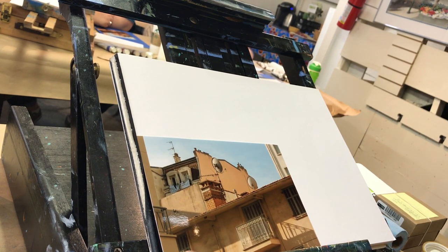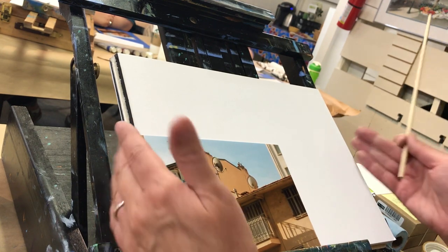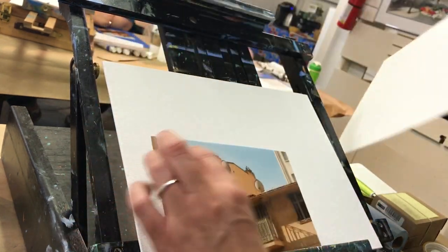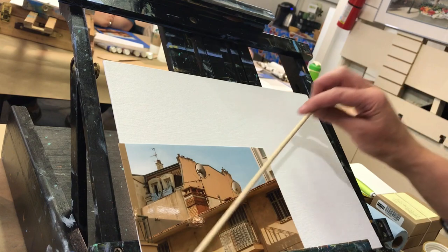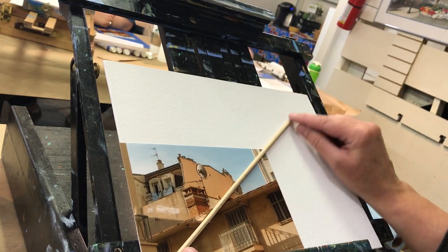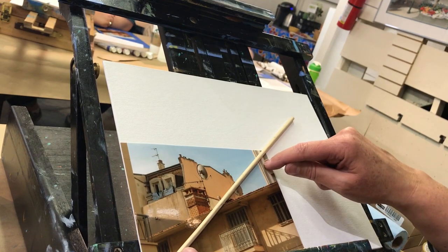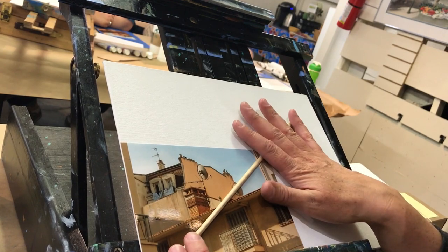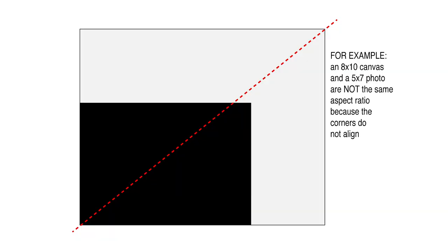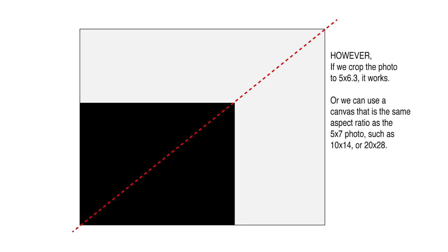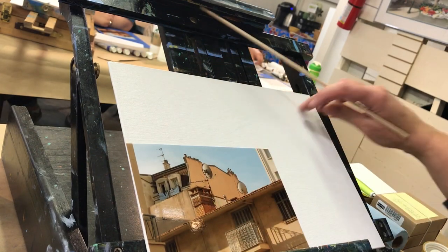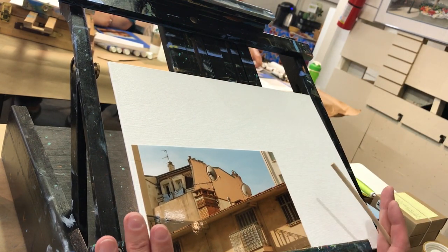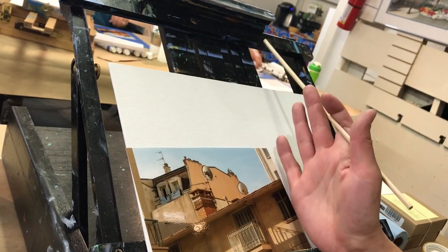So before I go any further, let's see if the aspect ratio is the same. Here's an easy way to find out: from corner to corner of my canvas. I take my photo, line it up with the corner, and measure from corner to corner to see if it lines up with the corners of my photo. If all these corners line up, your aspect ratio is the same. It doesn't line up completely — so it's not exactly the same aspect ratio.